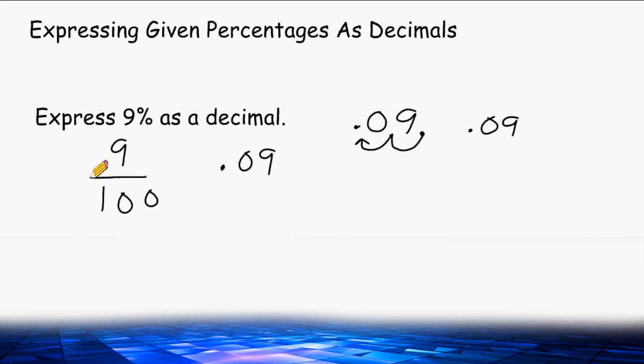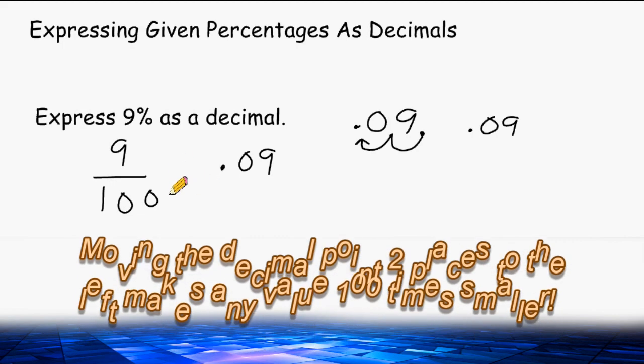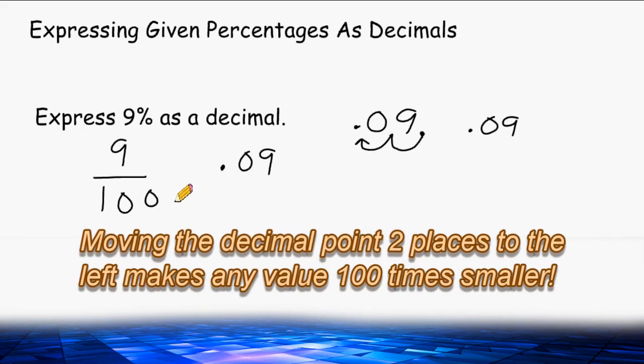The reason we move the decimal point two spaces to the left is because a percentage is out of 100 — in other words, we're taking 9 and dividing by 100. Whenever you divide by 100, it makes your value 100 times smaller.